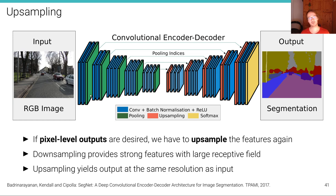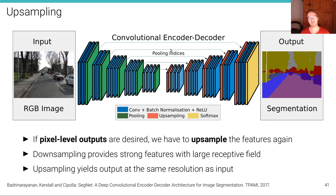This is an example of such an architecture where we have both convolution and pooling operations as well as upsampling and convolution operations to go from low resolution back to high resolution. We need to downsample in the first place because without downsampling we wouldn't get strong features with a large receptive field. Downsampling is necessary to aggregate over larger image regions quickly with a limited number of parameters. Upsampling then yields results at the same resolution as the input.